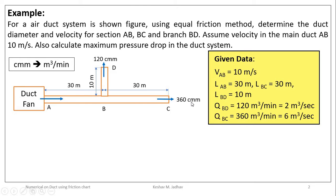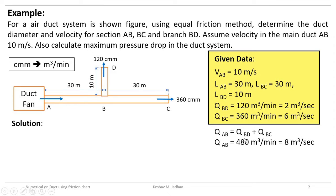To convert 360 cubic meters per minute into cubic meters per second, we divide by 60, giving Q_BC equals 6 cubic meters per second. Since the volume flow rate through section AB is not given, whatever air comes through AB goes into BD and BC. Therefore Q_AB equals Q_BD plus Q_BC, which is 120 plus 360 equals 480 cubic meters per minute, or 480 divided by 60 equals Q_AB equals 8 cubic meters per second.